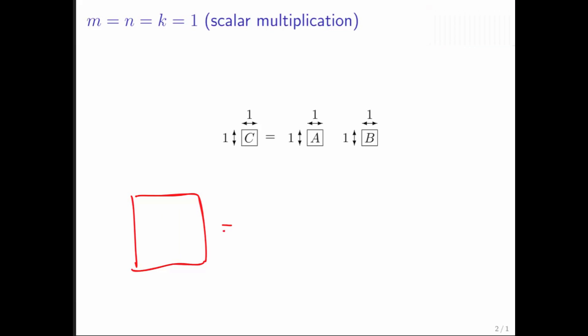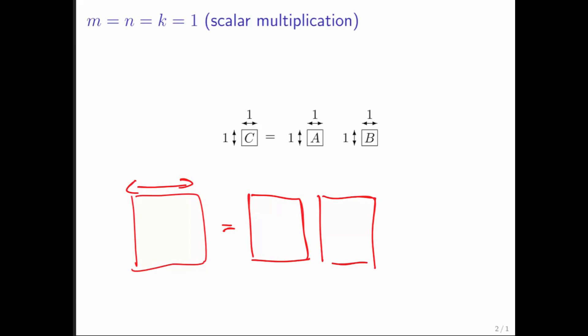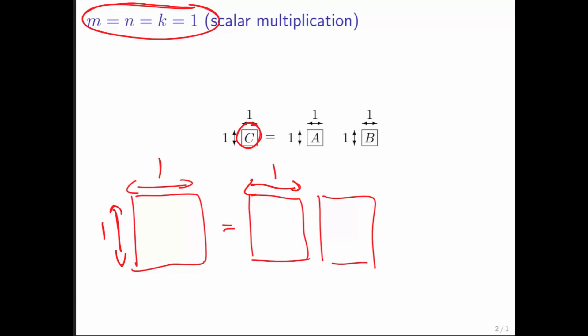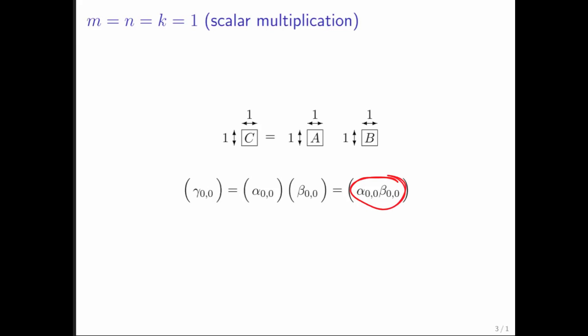We're always looking at a matrix-matrix multiply in the general form. What if we take m equal to n equal to k equal to 1? You end up with a one-by-one matrix computed by multiplying a one-by-one matrix times a one-by-one matrix. That's just scalar times scalar, because the (0,0) entry in C is computed as the dot product of the 0th row of A with the 0th column of B — each having only one element, giving scalar multiplication. So scalar multiplication is just a special case of matrix-matrix multiply.